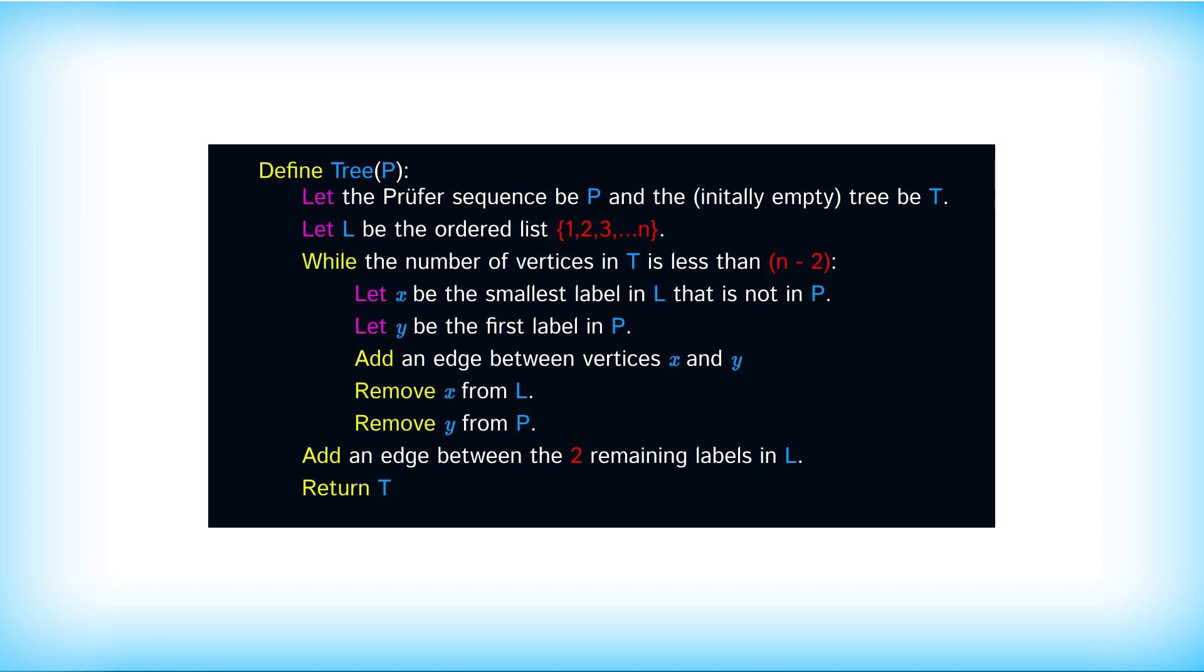What we're going to do is let the proof of sequence be p and we're going to create an ordered list of the vertices 1 to n. While the number of vertices is less than n minus 2, we're going to call x the smallest label in l that is not in p. Let y be the first label in p and add an edge between vertices x and y.